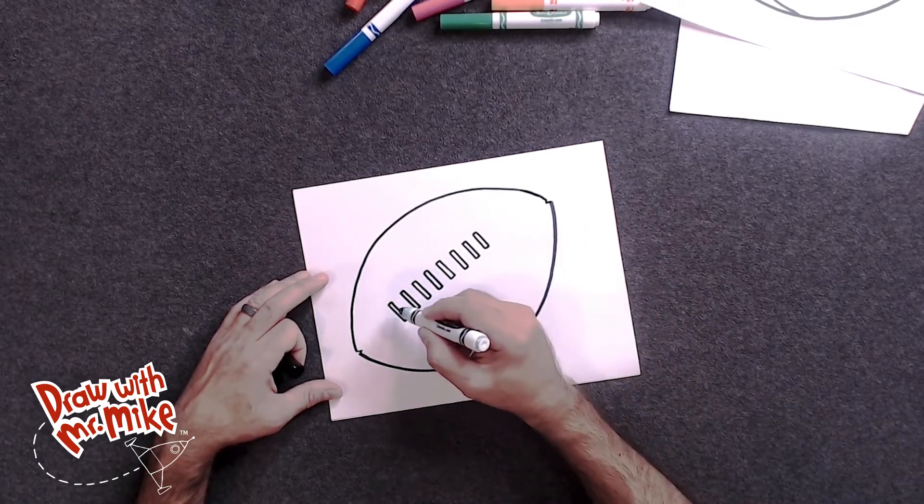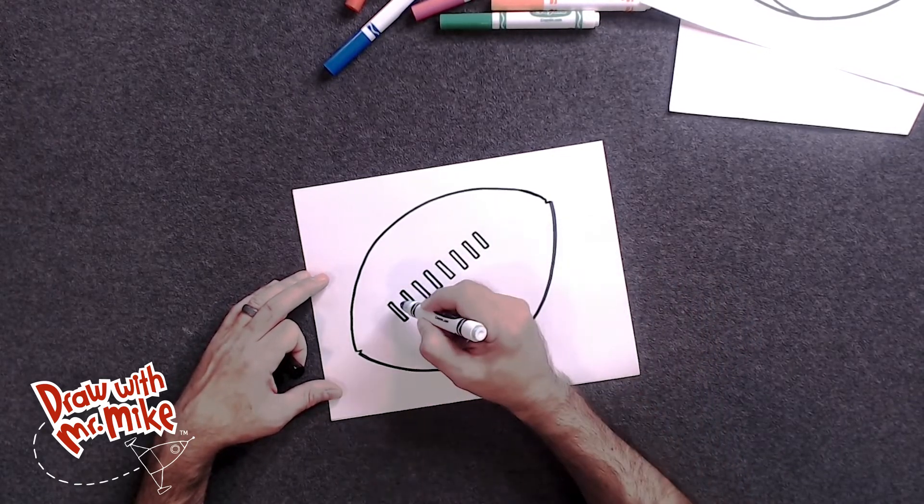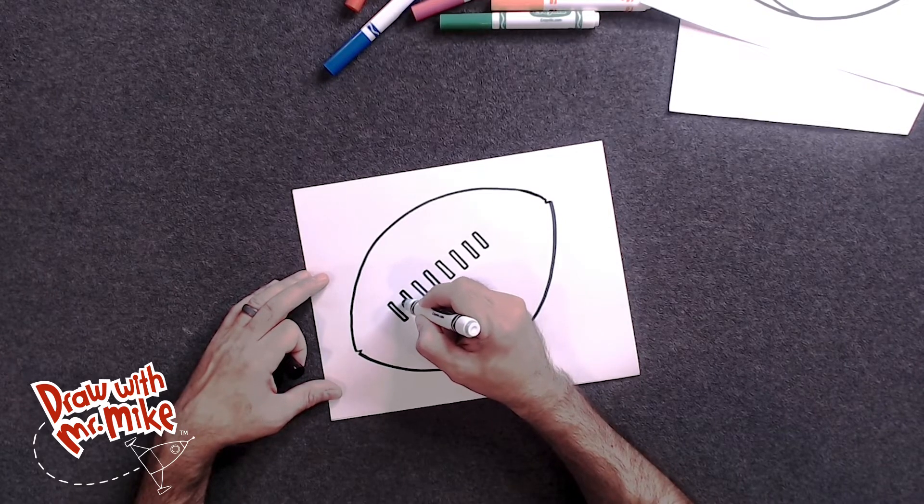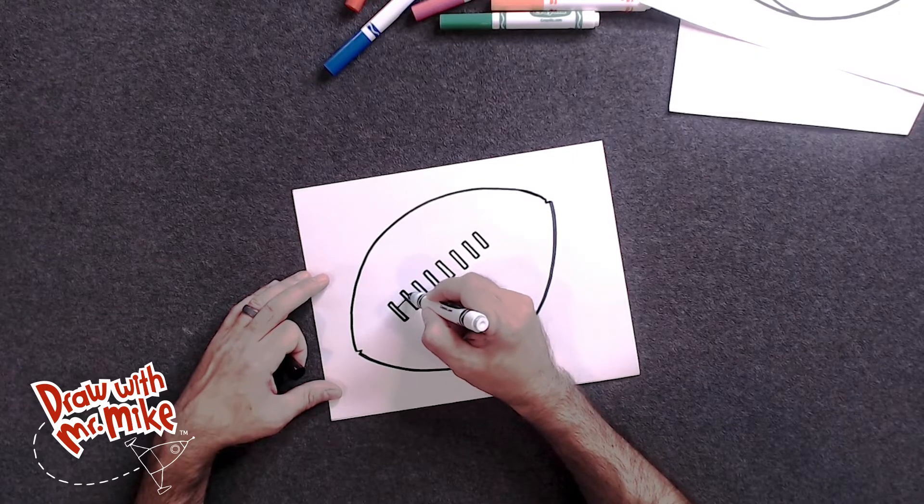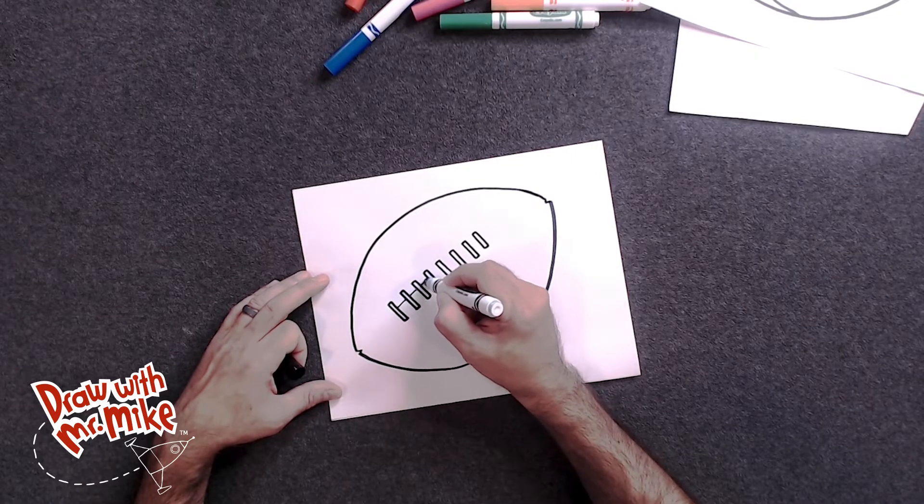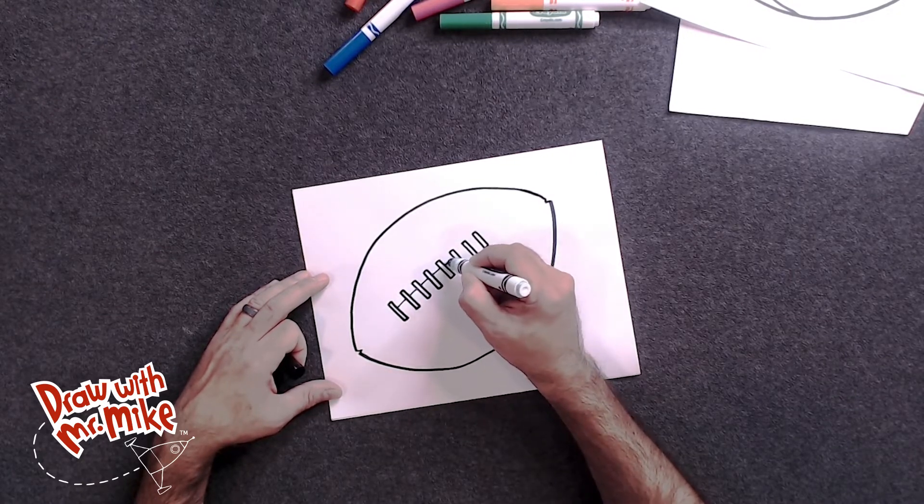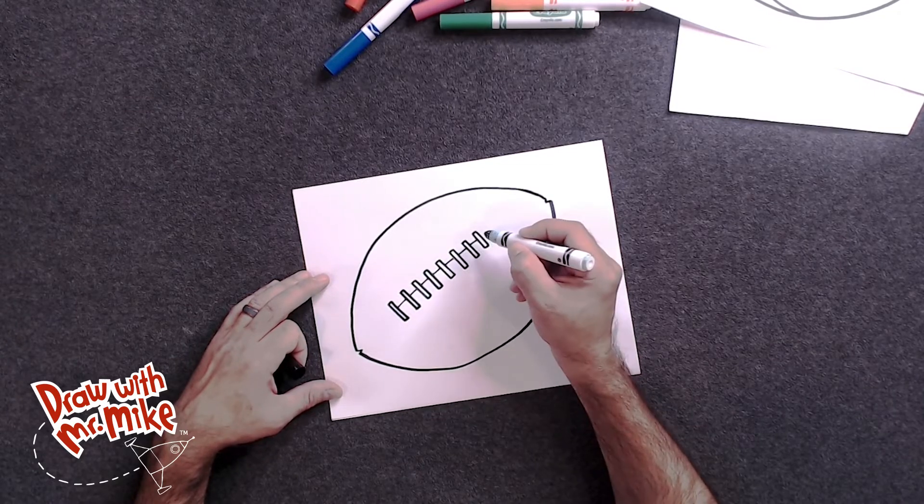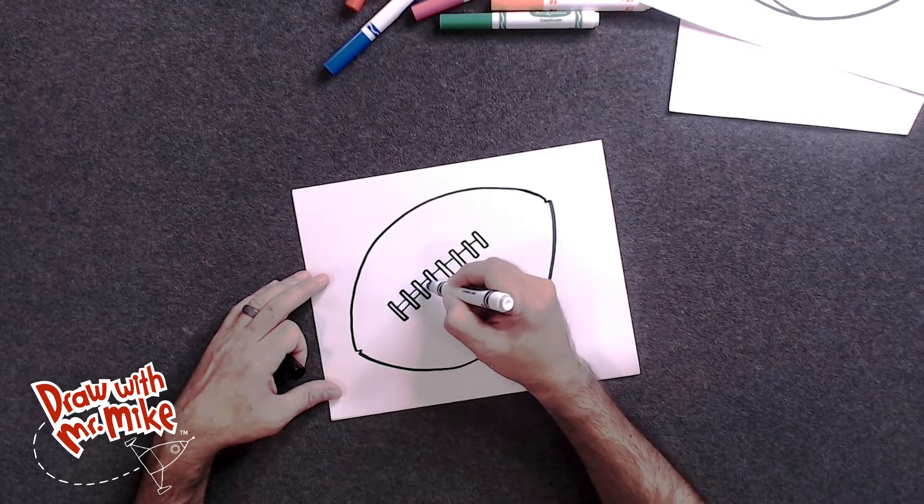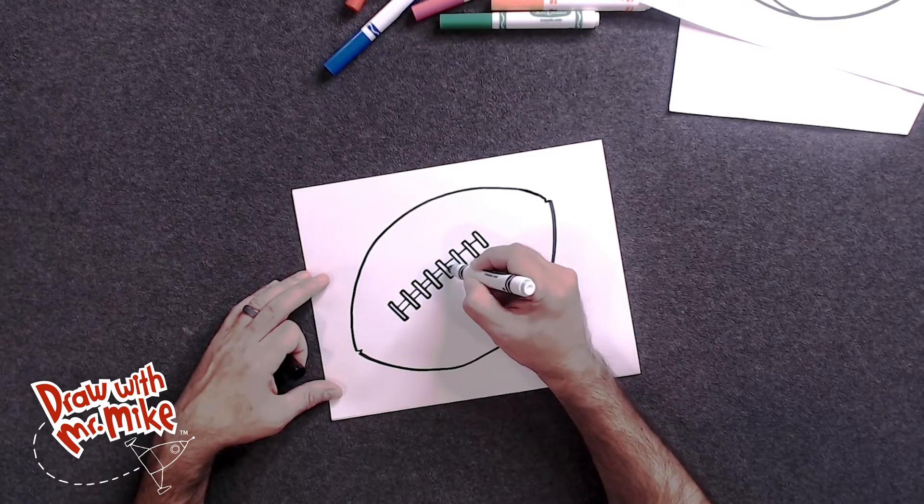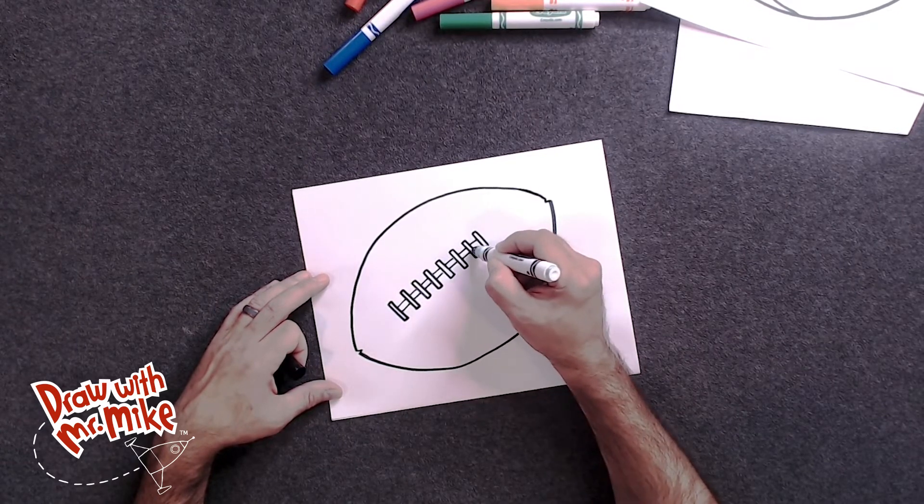So now that we have those, now we have to do the inside part of the laces. So now we're going to take a line and join these across. So we'll go like this, and then all the way across. And then we're going to do the bottom after we finish this. So we stop here, and then we're going to do the bottom part right here. And just like that, we have our laces.